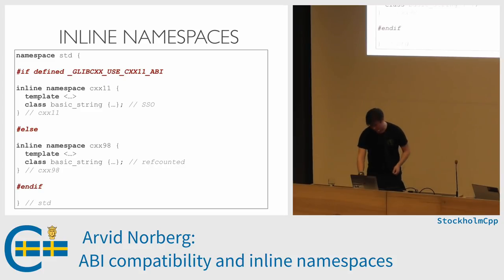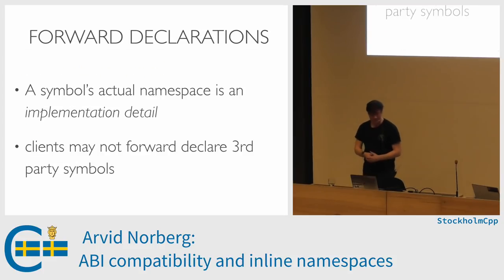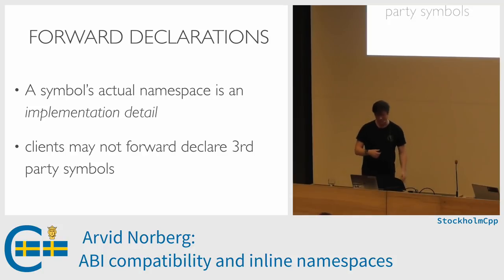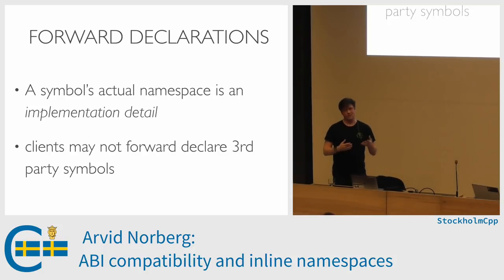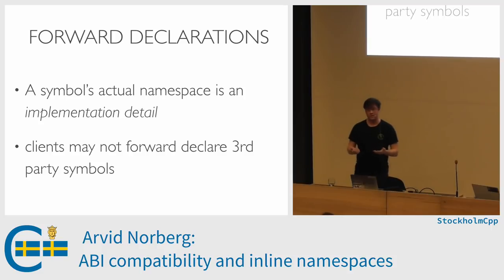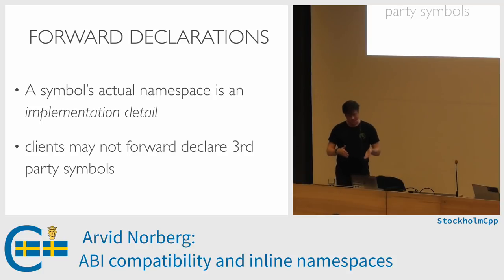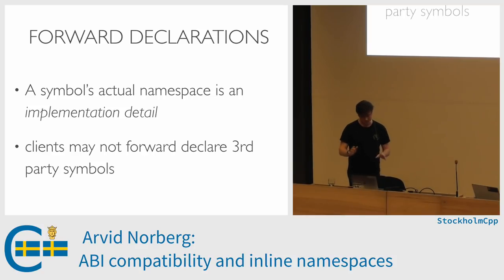Moving on to the last topic: forward declarations. As we've seen, a symbol's actual namespace is not necessarily the namespace you think it is. I would consider it an implementation detail — it might be v1, v2, cxx11, cxx14, who knows? So if clients try to forward declare third-party library symbols inside what they think is the third-party library's namespace, they might be in for a surprise.